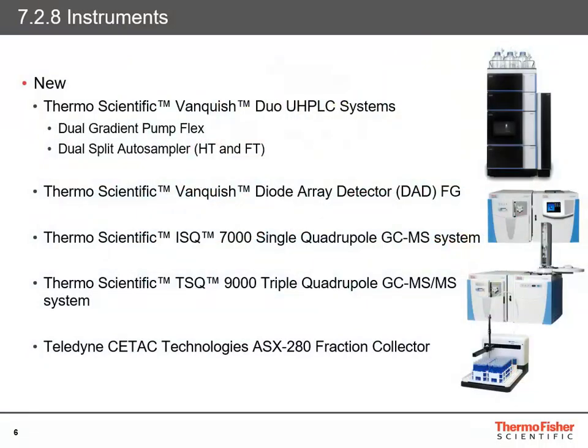The first new instrument is the Thermo Scientific Vanquish Duo UHPLC system — essentially a dual gradient pump with a dual autosampler, allowing you to run multiple new technologies such as dual LC: two HPLCs in one stack with completely separate flow paths. We've also added a new Vanquish diode array detector for the Flex range. There are two new mass spectrometers — the ISQ 7000 single quadrupole and the TSQ 9000 triple quadrupole, both GC mass spectrometers. We've also added a new driver for the Teledyne ASX-280 fraction collector.